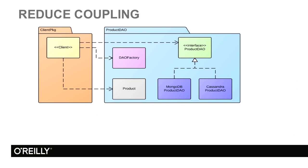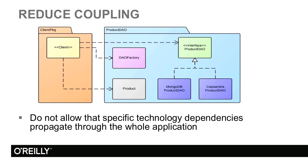A software engineering aspect is that you would like to reduce coupling from a particular data store in your application. In this diagram, we have two parts in our application: a client package and a product data access object. The product data access object is a software component that encapsulates access to the database. For our products, we may be using MongoDB, but at some point we may decide to switch to Cassandra or vice versa. We would not like the details of the database to propagate throughout the whole application, and we would like to localize the changes just to the narrow area of the product data access object.